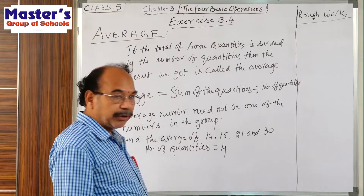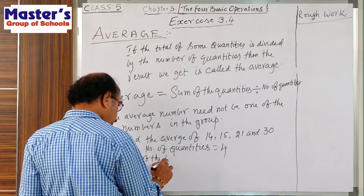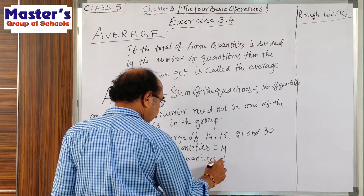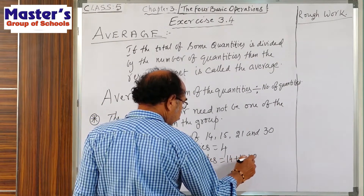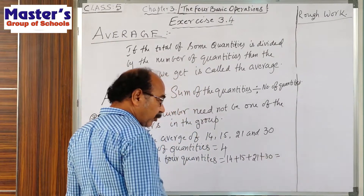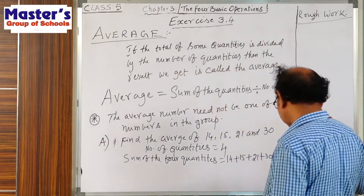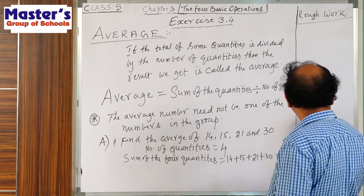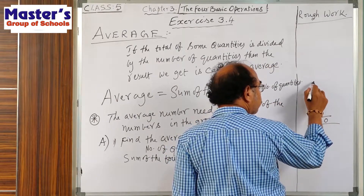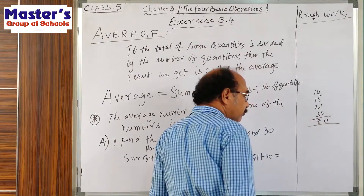Now find the sum of the four quantities. Add 14, 15, 21, and 30. Since these are small numbers, we can add them column-wise. 4 plus 5 plus 1 plus 0 is 10, write 0 carry 1. Then 1 plus 1 plus 2 plus 3 plus 4 gives us 80. So the sum of the four quantities is 80.